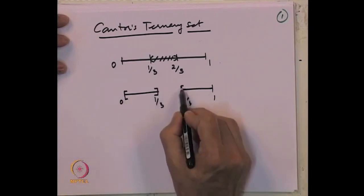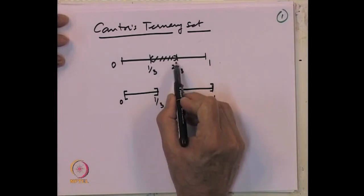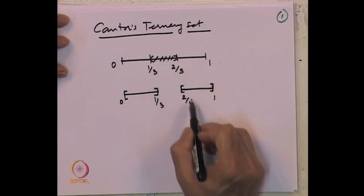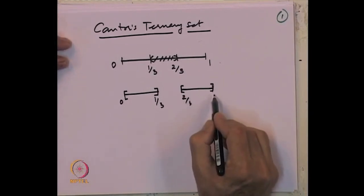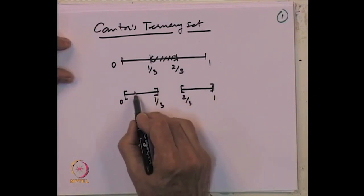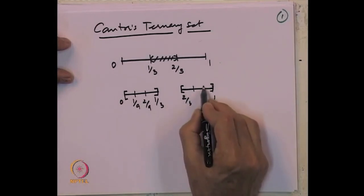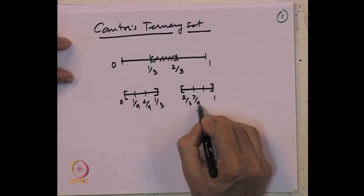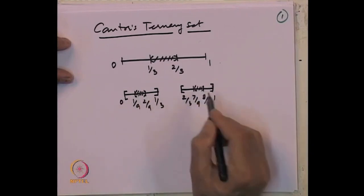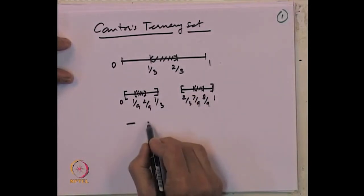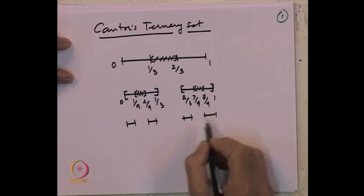Having removed the middle one-third open interval of [0,1], we get these 2 closed intervals. We repeat the process with each sub-interval: from each, remove the middle one-third portion. So the middle one-third of [0, 1/3] is (1/9, 2/9), and the middle one-third of [2/3, 1] is (7/9, 8/9). This gives us 4 sub-intervals at the second stage. We continue this process and eventually something will be left.